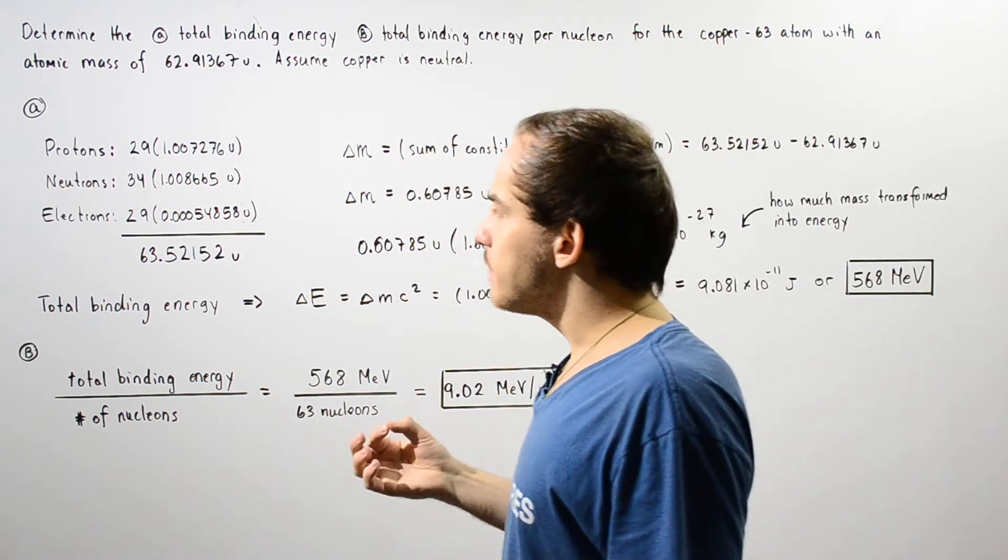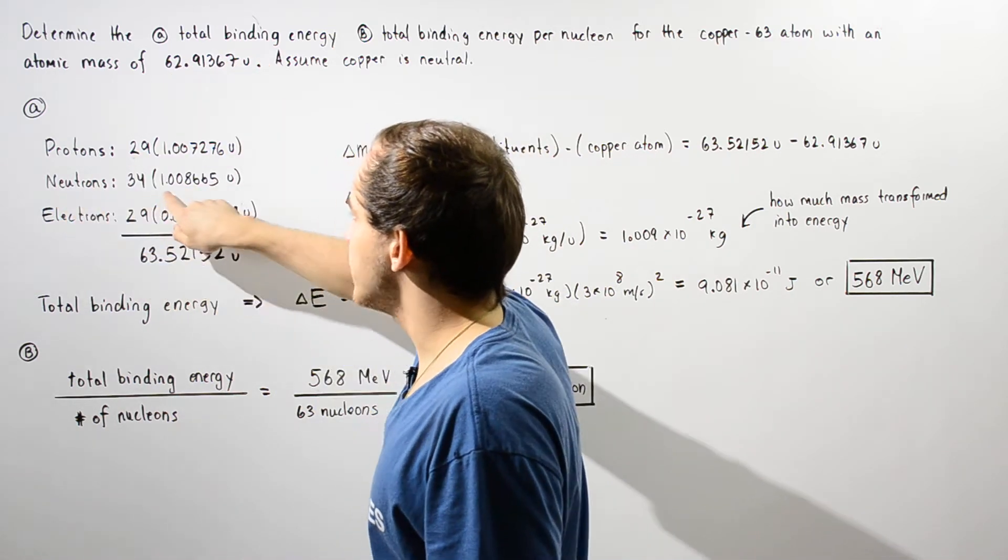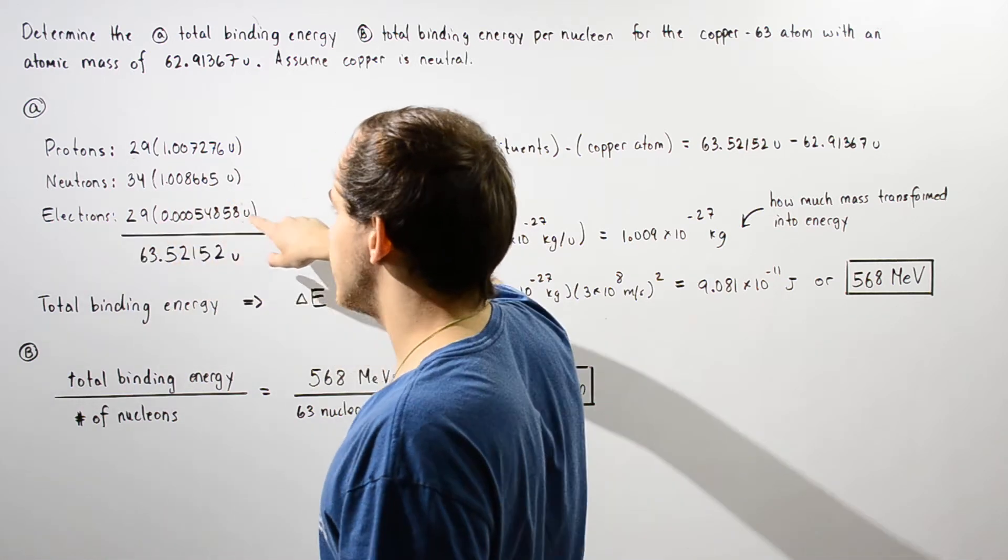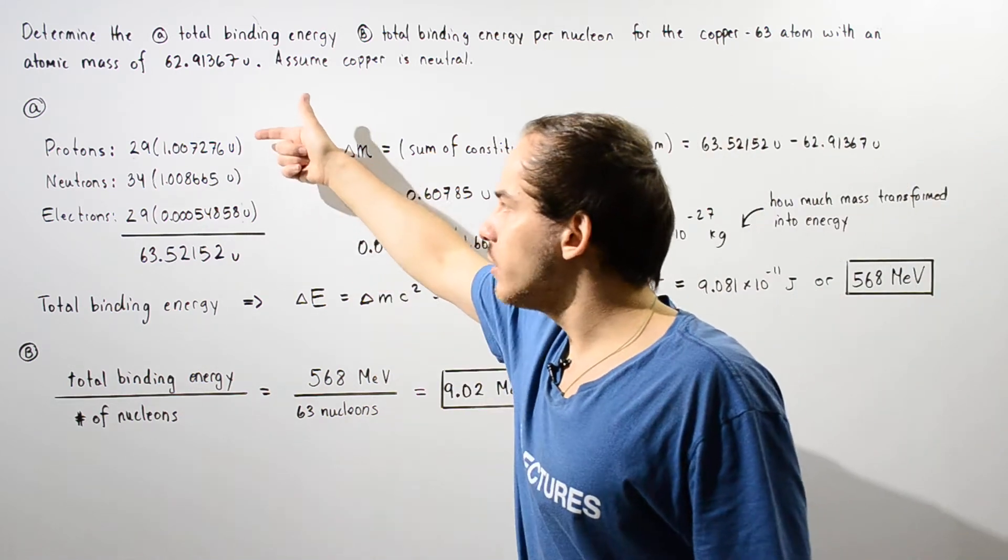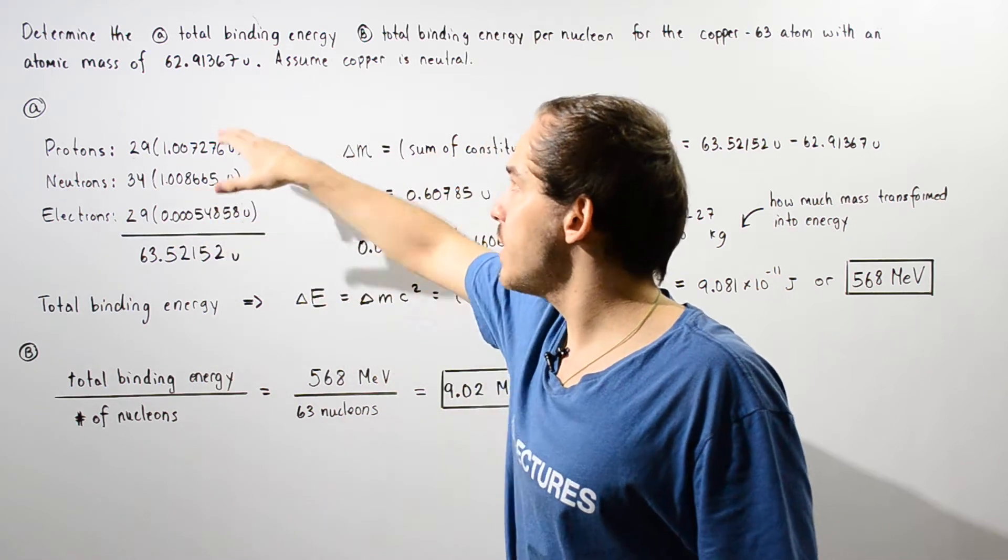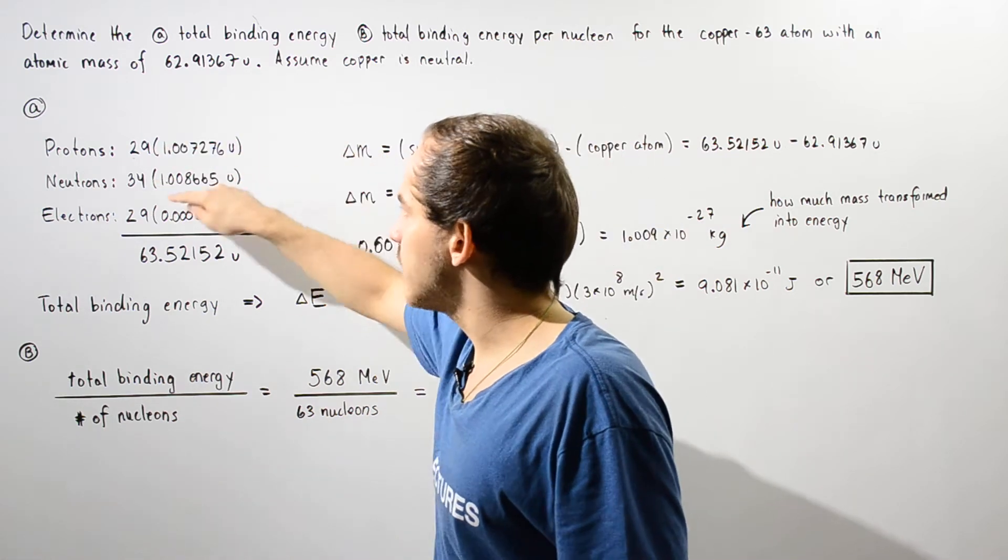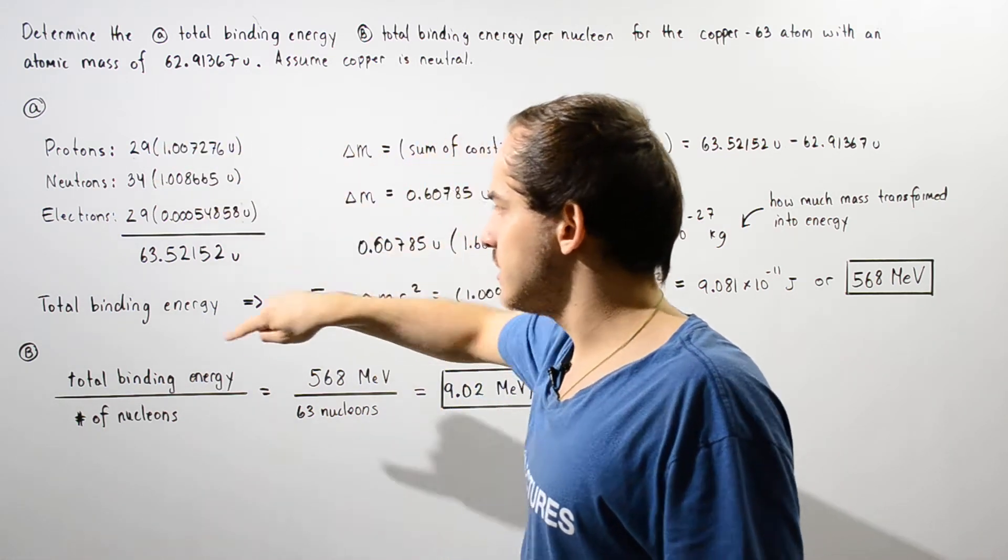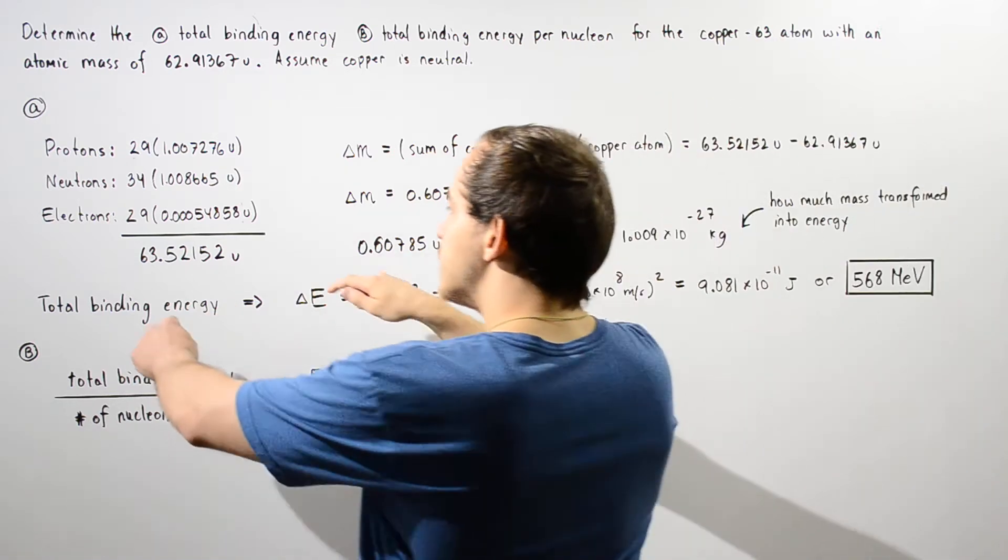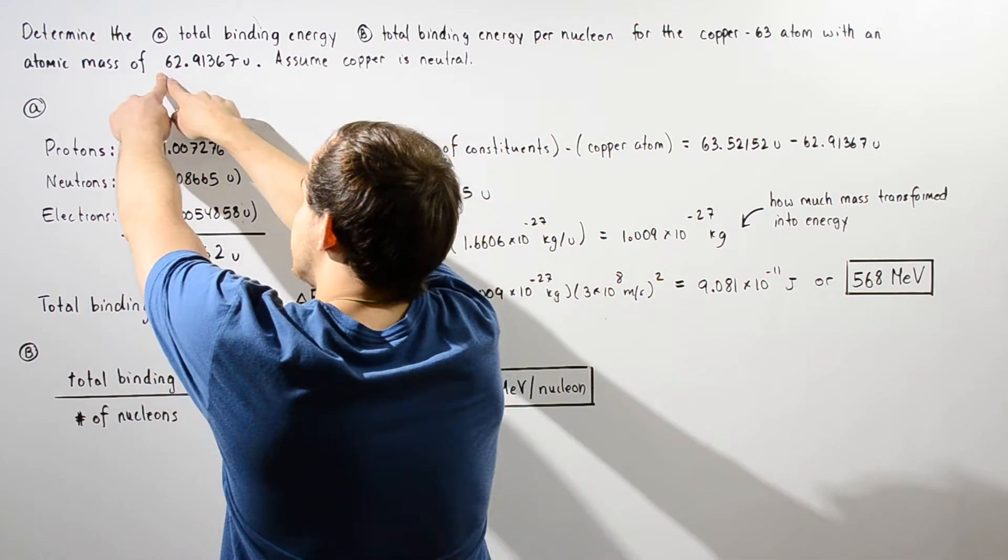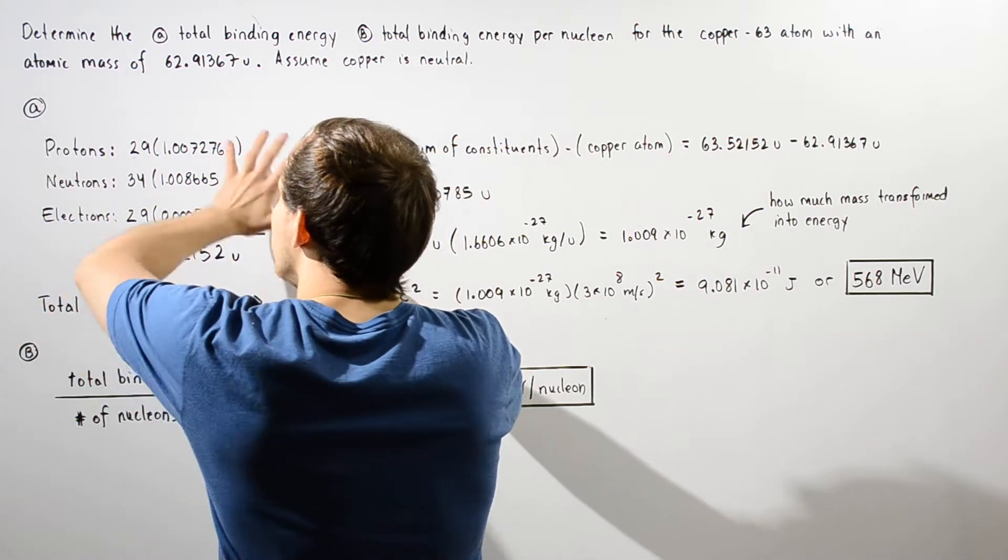The atomic mass of a single proton is given by this value. The mass of our neutron is given by this, and that of the electron is given by this. Now we want to calculate the total mass of all these constituents and then compare that mass to the actual mass of our copper. If we multiply these out and add these three quantities, we get 63.52152. Notice that this is greater than this, and that means the copper atom is actually more stable and lower in energy than the sum of all these constituents.